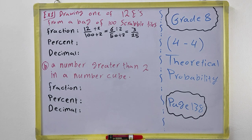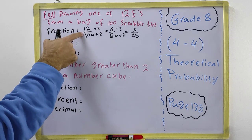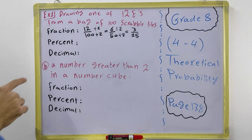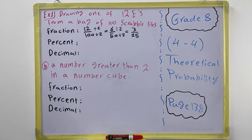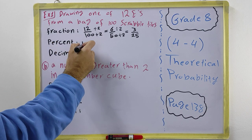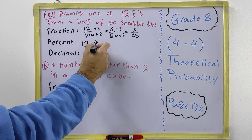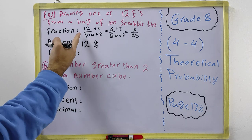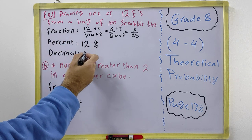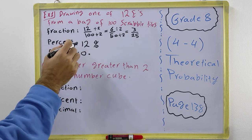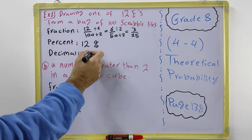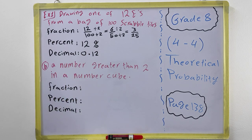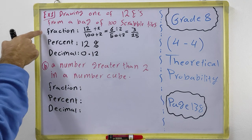For the percent: looking at our first fraction, 12 over 100 — percent means make the denominator 100, and it already is 100, so we don't need to change anything. It is simply 12%. For the decimal: whenever the denominator is 100, we have 0. followed by 2 digits, so 12 becomes 0.12.